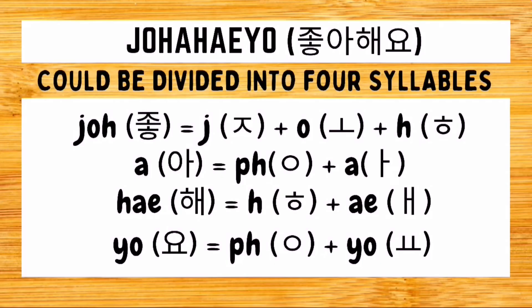How do we write chowayo in Hangul? There are four syllables. For the first syllable jo, we draw a jiyut character, followed by an o character, followed by a hiyut character. For the second syllable a, we draw a placeholder iyung followed by an a character. For the third syllable he, we draw a hiyut character followed by the e character. For the last syllable yo, we draw a placeholder iyung followed by a yo character. We then combine the Hangul for all four syllables to form the Hangul of chowayo.